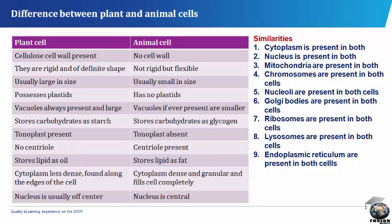Plants and animals differ in various ways. The plant cell has a cellulose cell wall, whereas there is no cell wall in an animal cell. Plant cells are rigid and of definite shape, but animal cells are not rigid but flexible. Plant cells are usually large in size, but animal cells are usually small in size. Plant cells possess plastids; animal cells have no plastids. Plant cell vacuoles are always present and large, but in animal cells vacuoles are smaller. Plant cells store carbohydrates as starch, but animal cells store carbohydrates as glycogen. Tonoplast is present in plant cells but absent in animal cells.